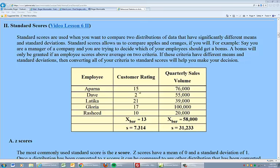But as you can see, customer rating scores have a mean of 13 and standard deviation just a little over 7. And quarterly sales volume has a mean of 58,000 and standard deviation a little over 31,000. So we really can't compare these. It's not easy to see which is above the mean.